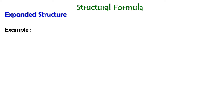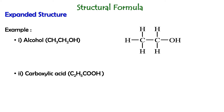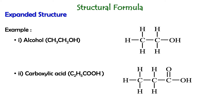Let's look at some examples. The first is alcohol with the molecular formula CH3CH2OH, which we can convert into expanded structure with this representation. The next example is carboxylic acid with the molecular formula C2H5COOH, shown with this expanded structure.